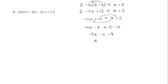I want x on its own so I need to divide by negative 5. I'm dividing by a negative number, so I need to turn the sign around, giving x is greater than negative 9 over negative 5. Two negatives make a positive, so x is any number greater than 9 over 5. Remember: if you are multiplying or dividing by a negative number to get x on its own, the inequality sign switches around.